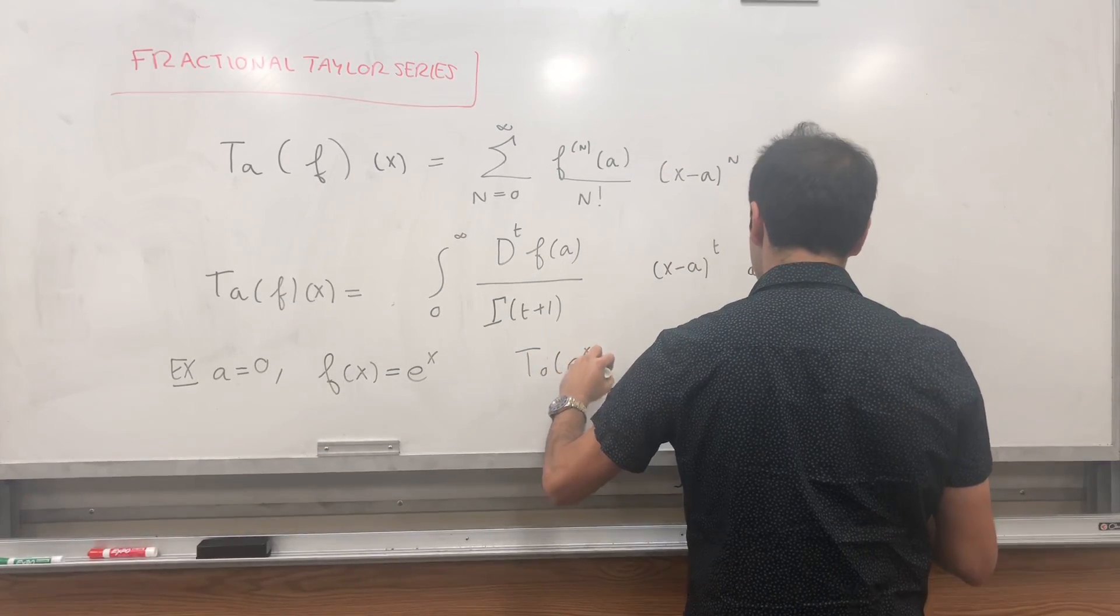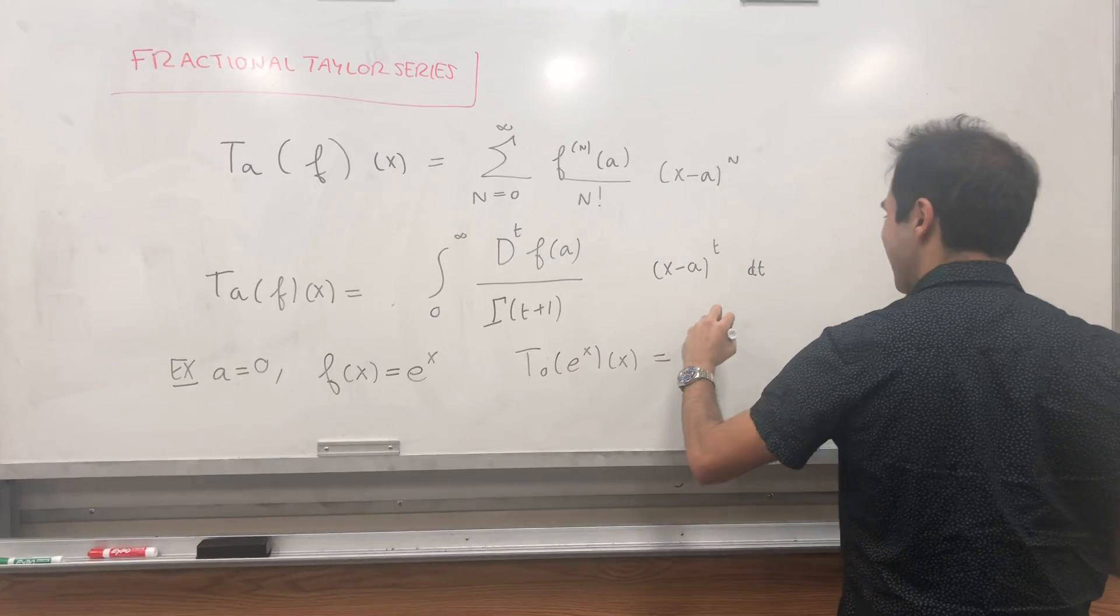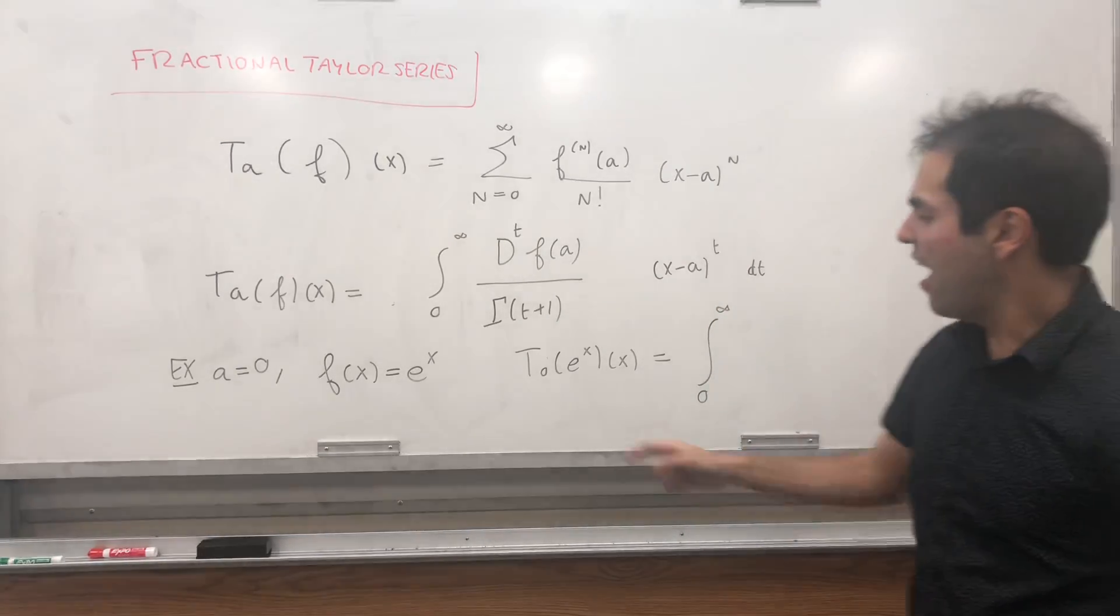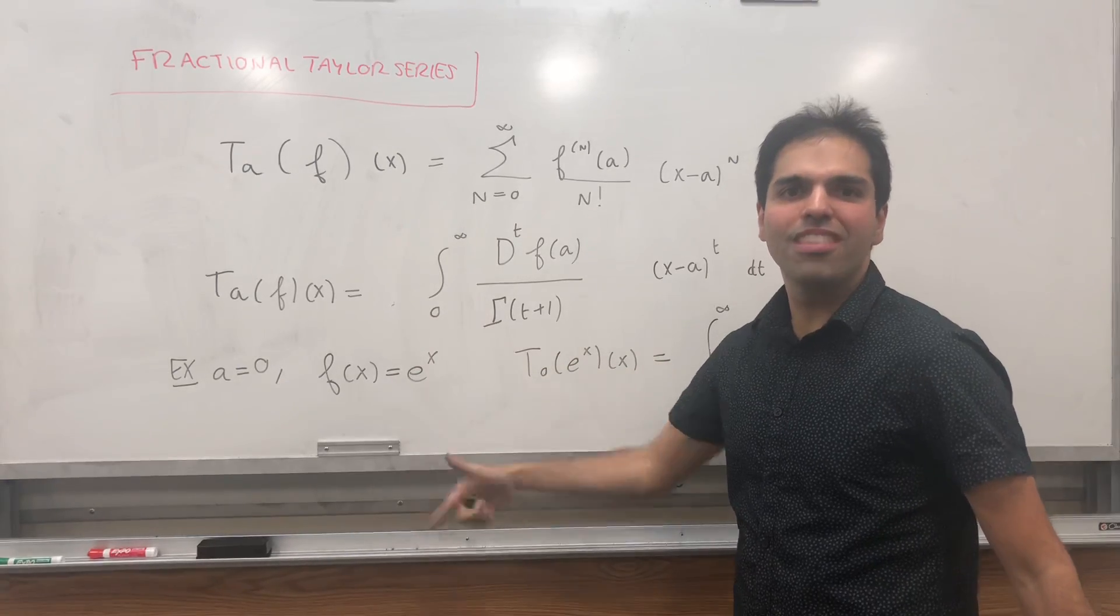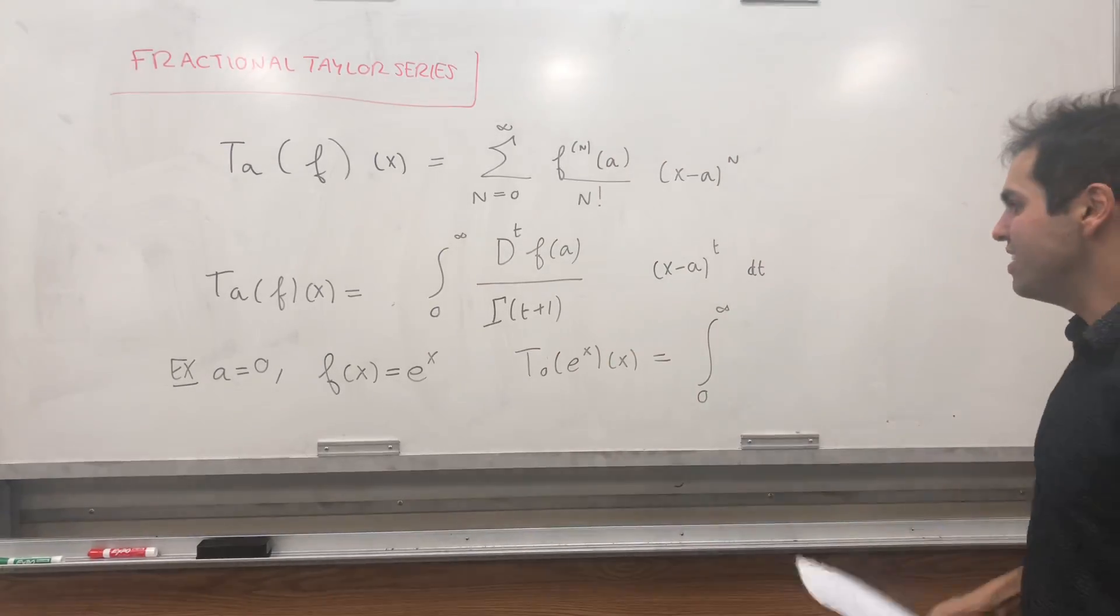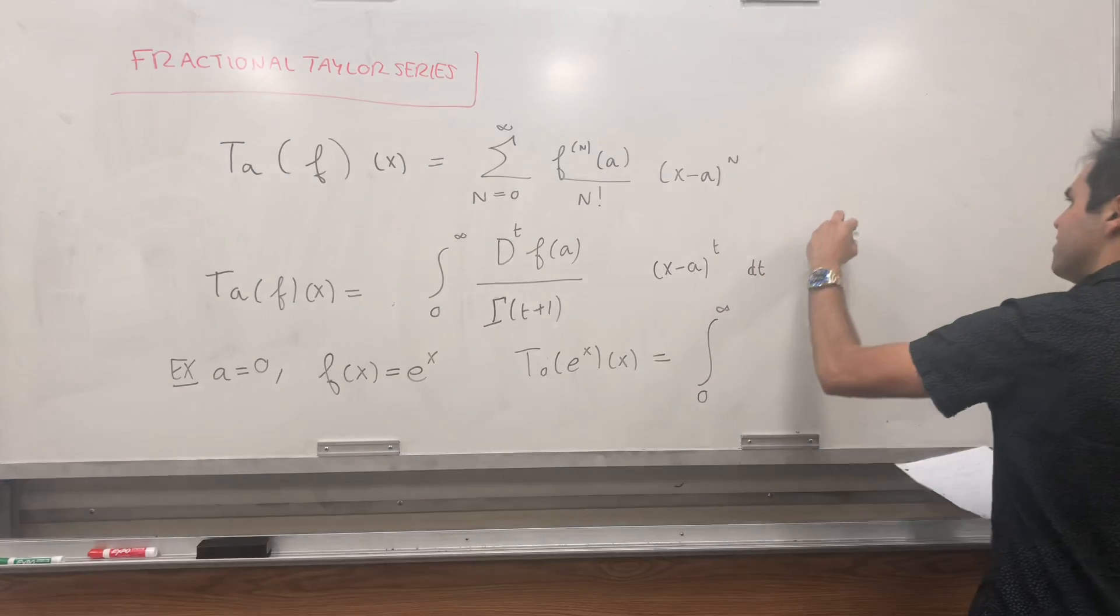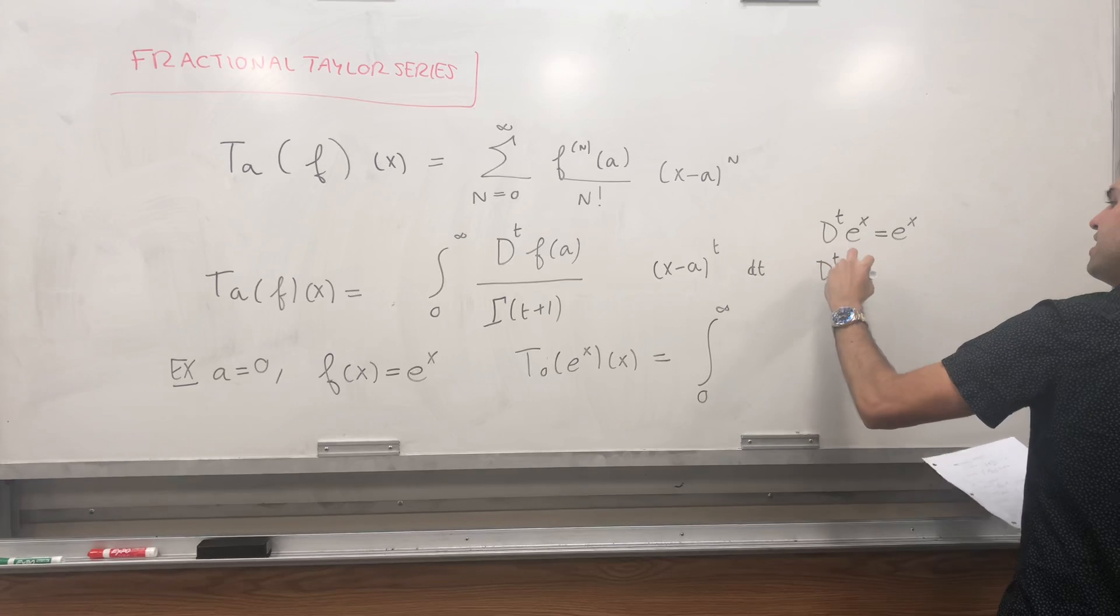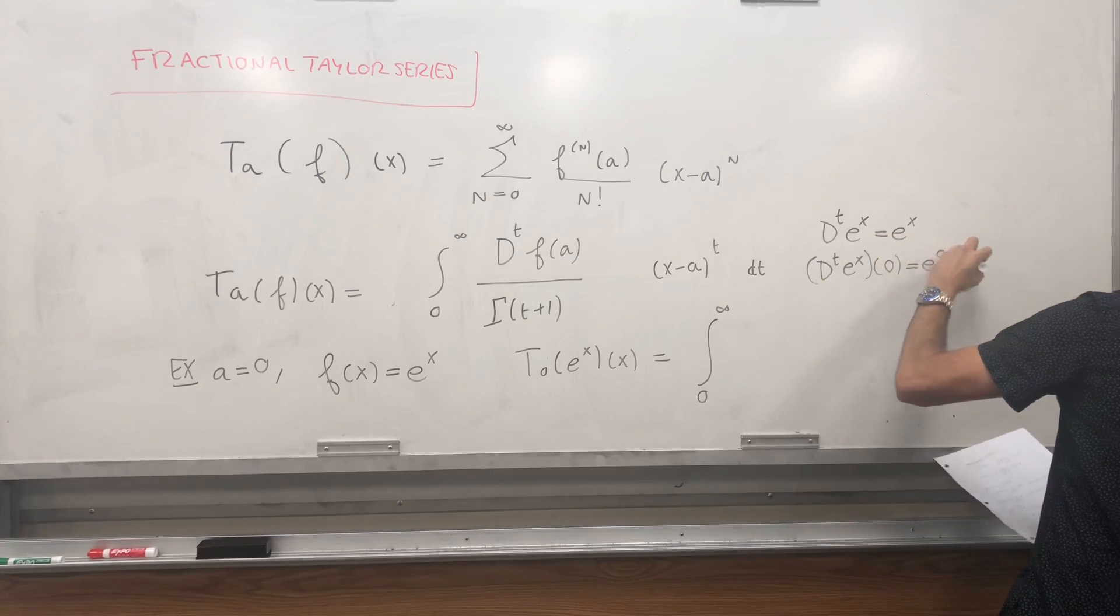T0f, or T0 of e to the x at x. Bad notation, but what this is. It's the integral from 0 to infinity. And, well, any derivative of e to the x is e to the x. So in particular, the tth derivative of e to the x is e to the x. And if you evaluate dt of e to the x at 0 is e to the 0, which is 1.